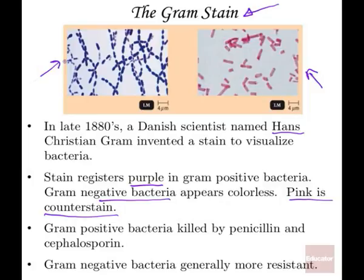Penicillin is quite effective for gram-positive bacteria. Gram-negative bacteria, on the other hand, are more resistant to these antibiotics. This is one of the main reasons why it's so important to wait when you have a respiratory infection — to determine first if it's bacterial, and second what kind of bacteria it is, because penicillin won't work against gram-negative bacteria.